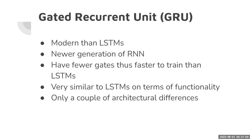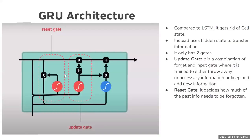GRUs only have a couple of differences in architecture. There is no cell state, and the hidden state is used to transfer information. Instead of three gates like in LSTMs, GRUs have just two: a reset gate and an update gate. The update gate is a combination of the forget and input gates — it either forgets the input, updates, or keeps the information the same. The reset gate decides how much of the past information needs to be forgotten. This all gets added into the new hidden state, which cycles back through the GRU architecture.